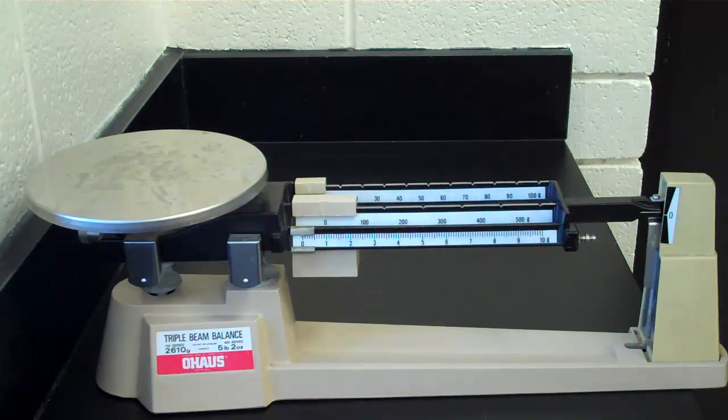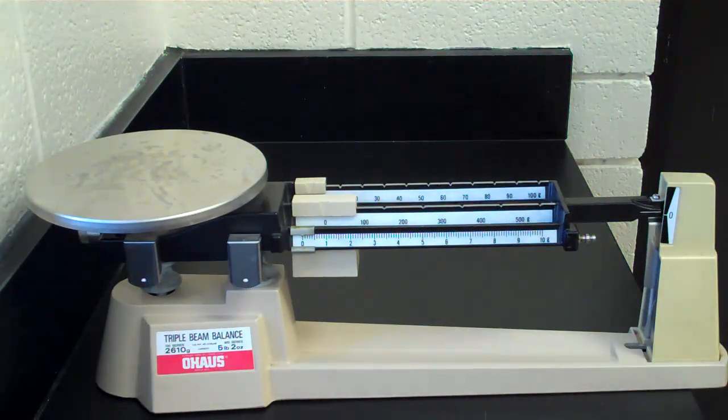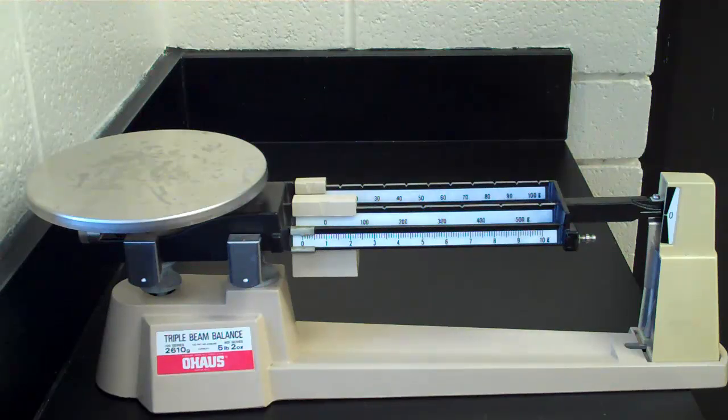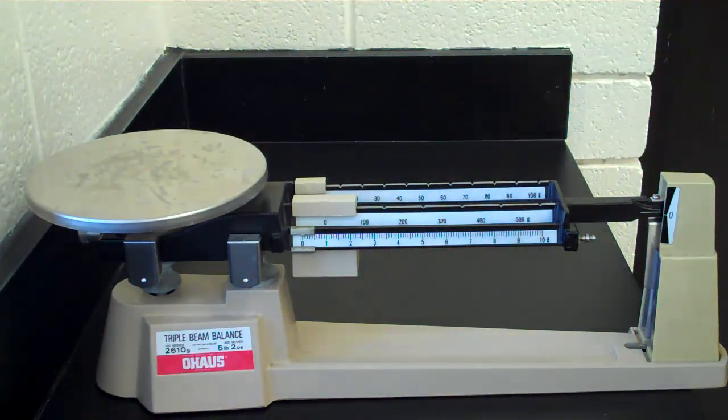We want those to be matched up. If they're not matched up, we need to have them line up, and that tells us that the balance is zeroed out. So it will give us an accurate reading.